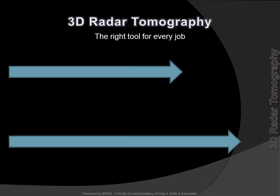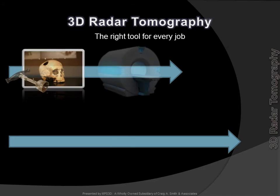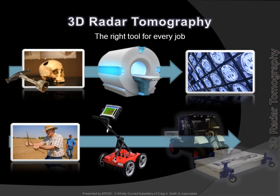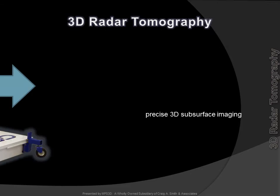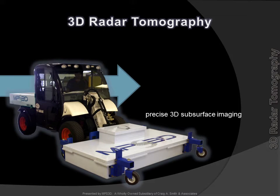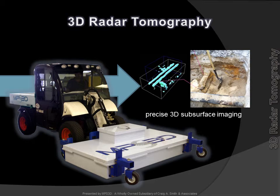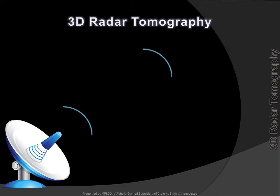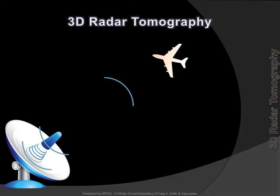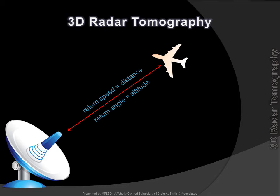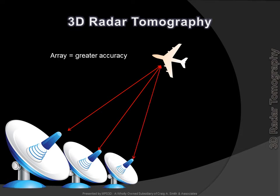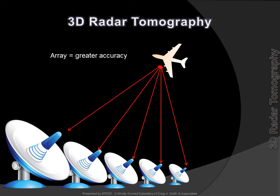The key to success is using the right tool for every job. For brain surgery, a CAT scan. For underground construction, 3D radar tomography. Radar tomography provides geospatially precise imaging of the underground, including anomalies not normally identified or located by traditional SUE efforts. Radar tomography works in a similar fashion to more familiar radar systems like aircraft radar, where data from the return signal provides information on the target. When subsystems are multiplexed or arrayed, the fidelity improves, providing greater accuracy.